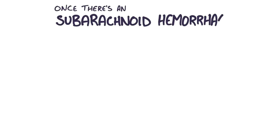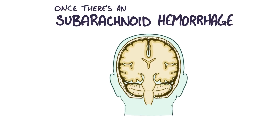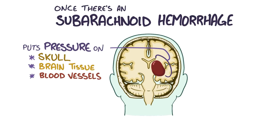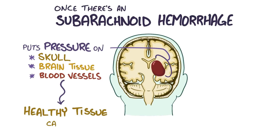Regardless of the cause, once there's a subarachnoid hemorrhage, blood starts spewing out from a damaged blood vessel and creates a pool of blood which increases pressure in the skull and puts direct pressure on nearby tissue cells and blood vessels. It also means that less blood is flowing downstream to the cells that need it, which leaves the downstream tissue deprived of oxygen-rich blood. Healthy tissues can die from both the direct pressure and the lack of oxygen within a few hours.